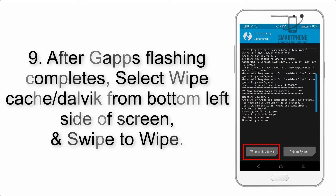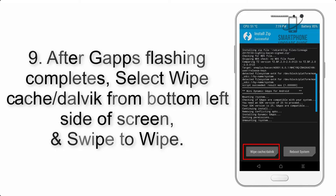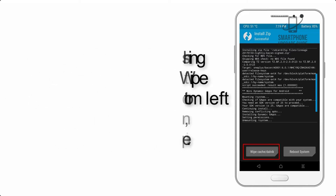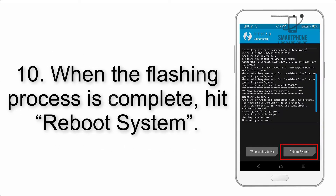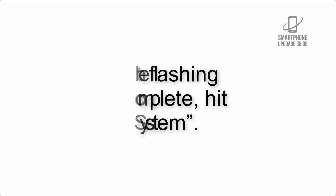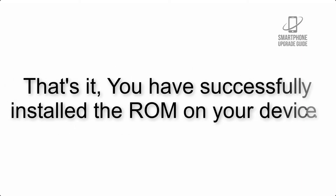Step 9: After GApps flashing completes, select Wipe Cache and Dalvik from the bottom left side of the screen and swipe to wipe. Step 10: When the flashing process is complete, hit Reboot System. That's it — you have successfully installed the ROM on your device.